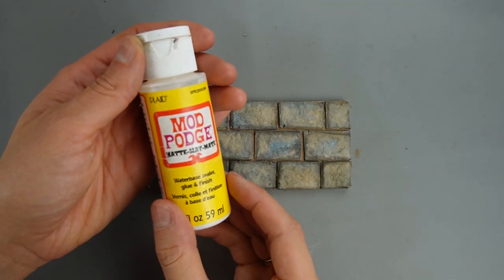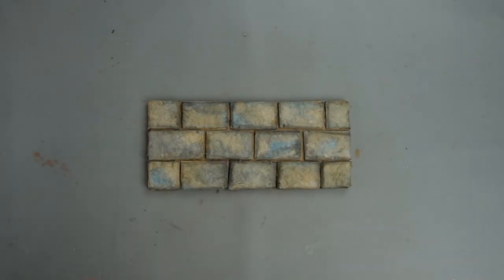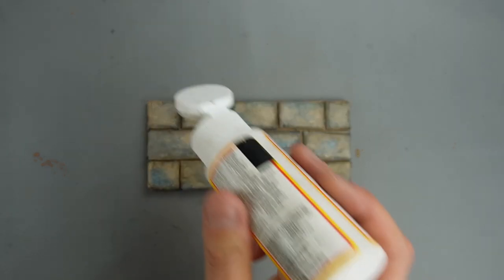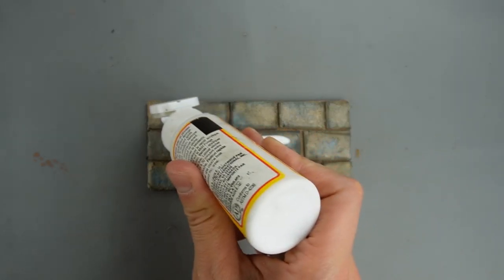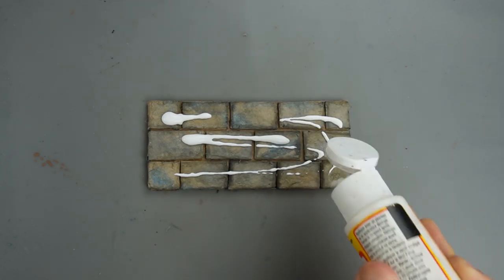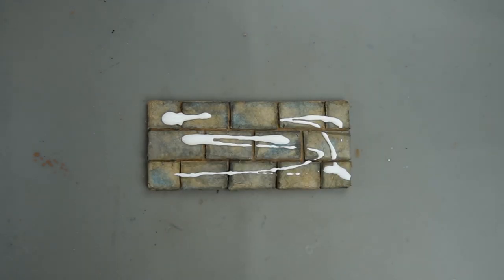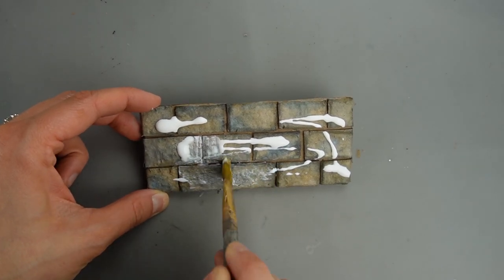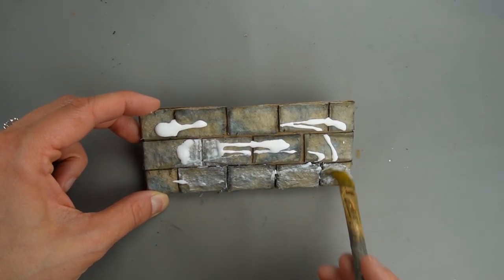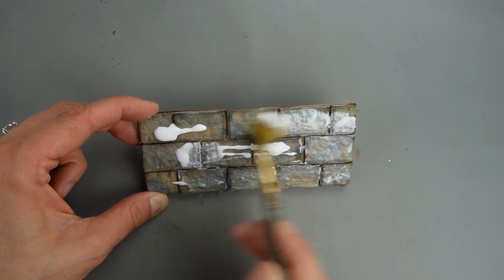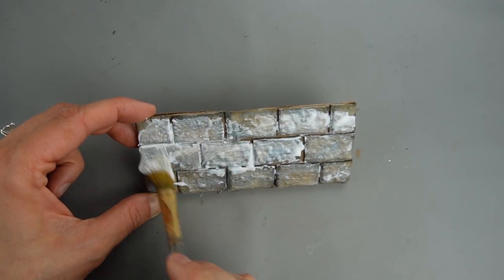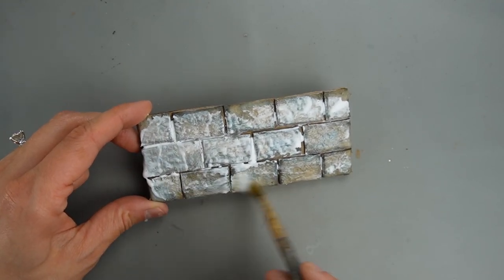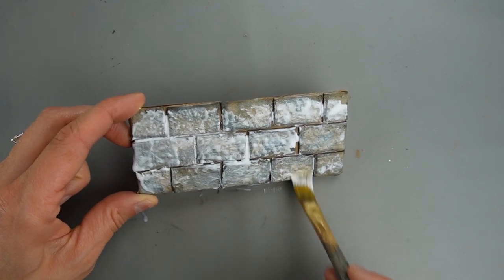Once the stones dry you need to seal them and I used some matte Mod Podge. You could also use gloss Mod Podge, any type of PVA glue or water-based sealer like polycrylic. When I add the dry powder to create the grout lines you'll see how this coat of sealer protects the original color of the stones. This coat of sealer also makes the colors richer and makes it look more like it did when the paint was still wet.